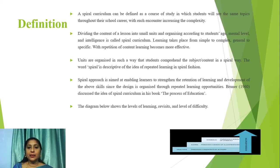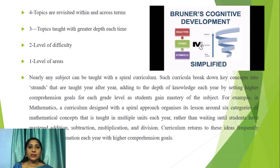The spiral approach is aimed at enabling learners to strengthen retention of learning and development of skills, since the design is organized through repeated learning opportunities. Bruner (1960) discussed the idea of spiral curriculum in his book The Process of Education. The diagram below shows the levels of learning, revisits and level of difficulty. Topics are revisited within and across terms with greater depth. At the first level it is the level of area, the second is the level of difficulty, the third is topic taught with greater depth each time, and the topmost is topics revisited within and across terms. This is Bruner's cognitive development model of spiral curriculum shown in simplified form.